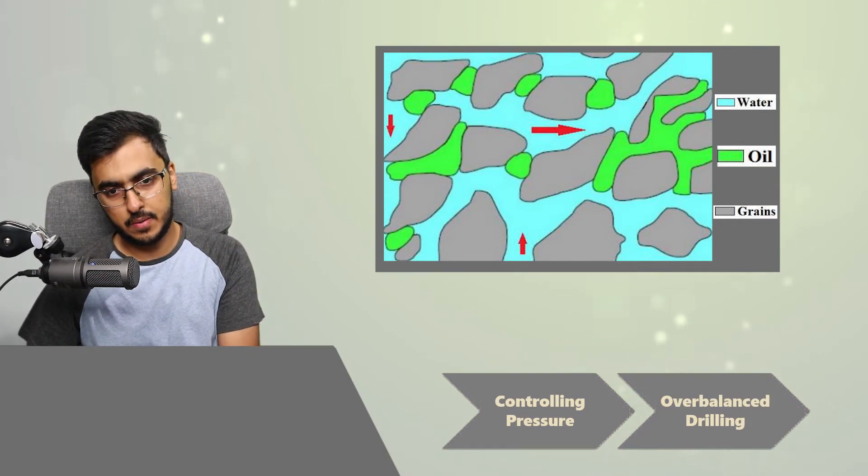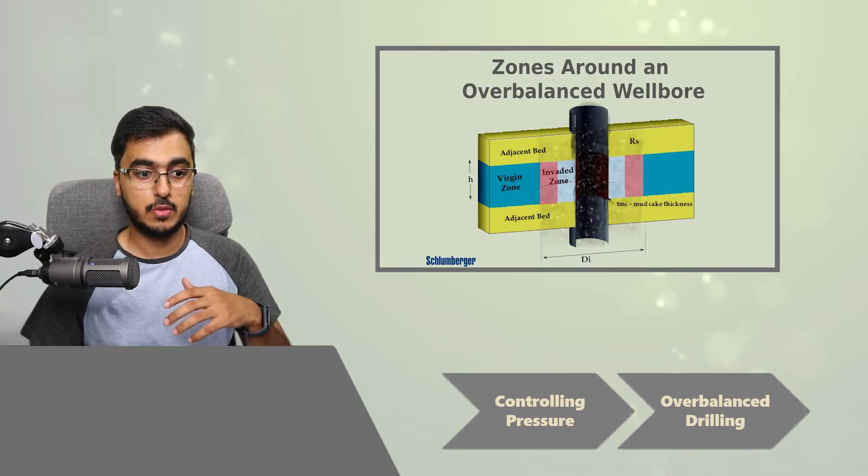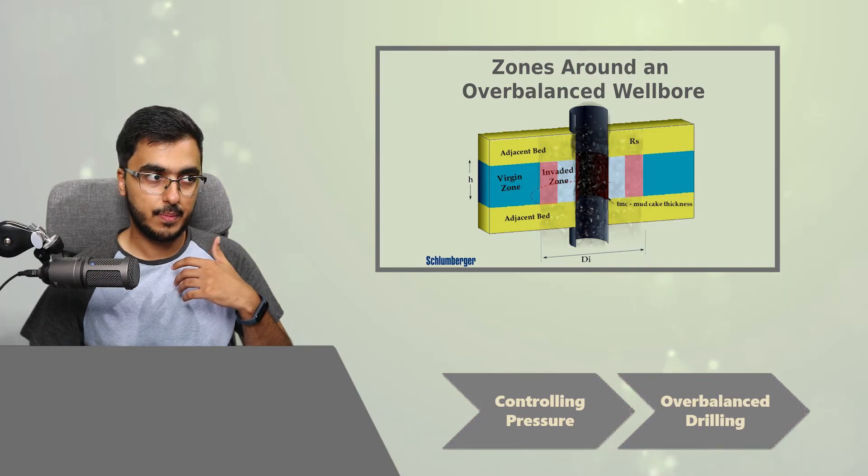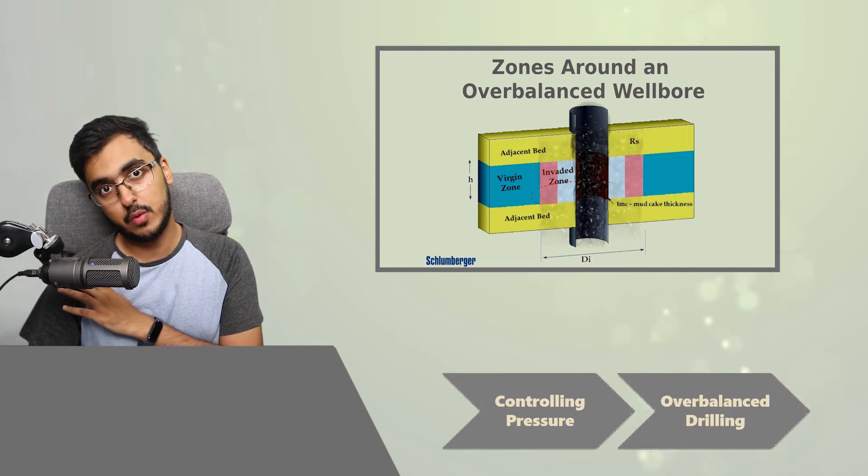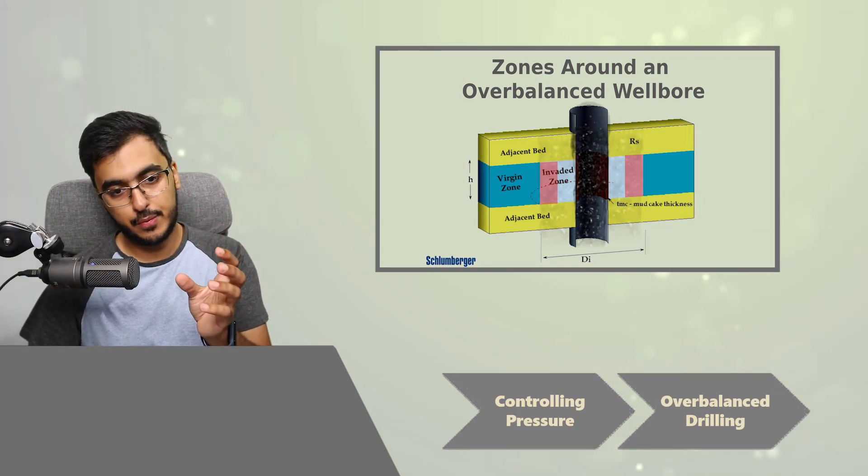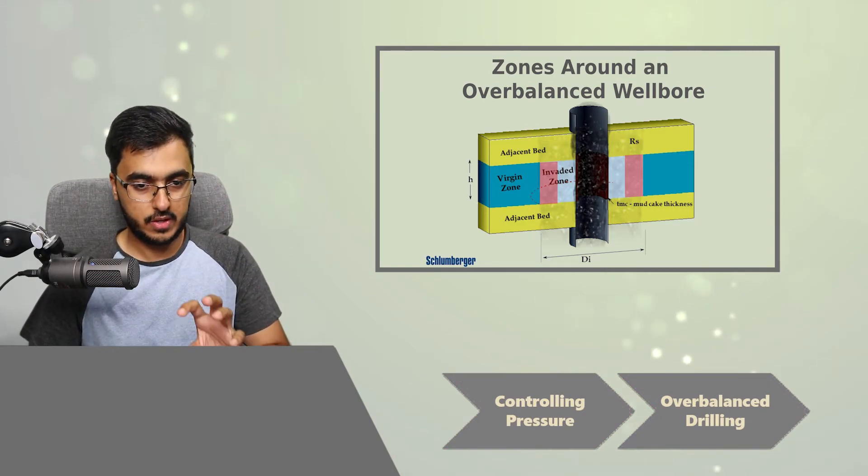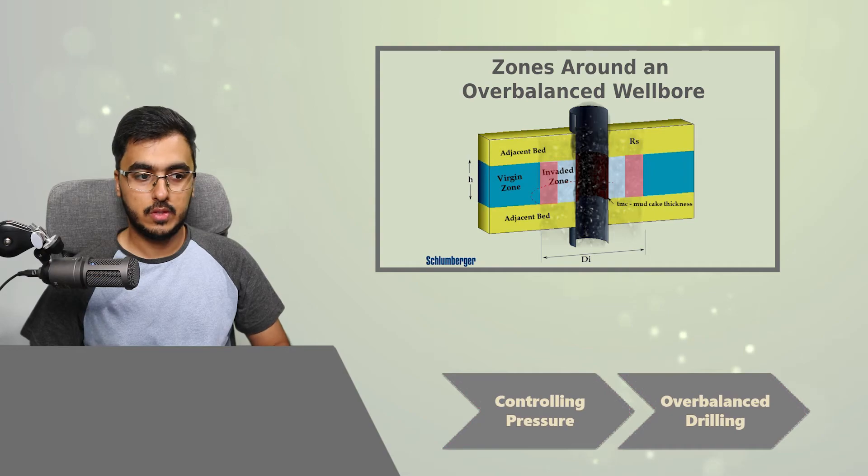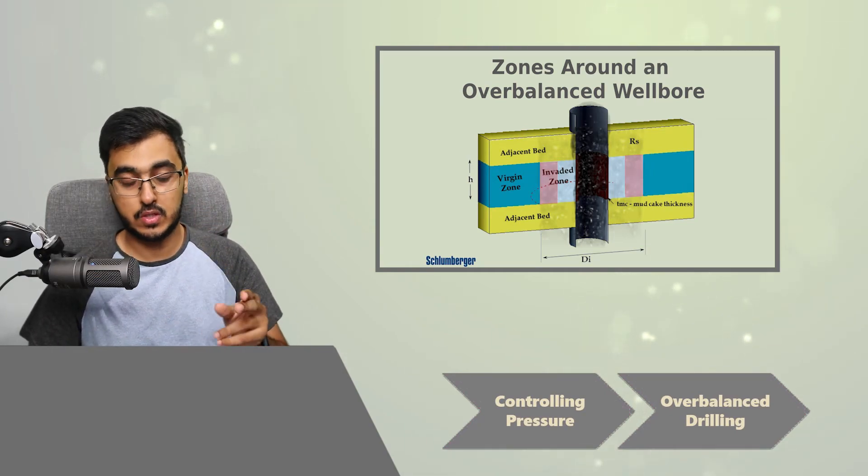So the second zone is called the transition zone or the invaded zone, and it is the area where the mud displaces some of those movable fluids. So not all of the movable fluids are moved, it's just some of them. So you have some of the movable fluids left and the immovable fluids are still there. So in simple models, as I said, flush zone and transition zone are considered the same.